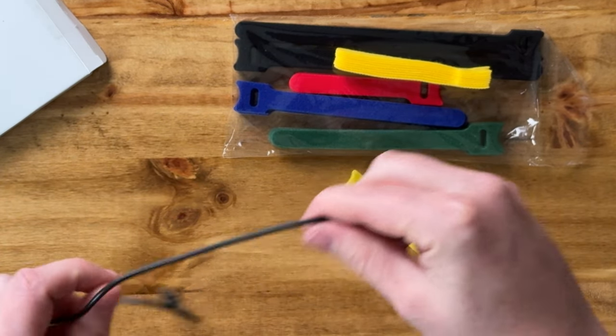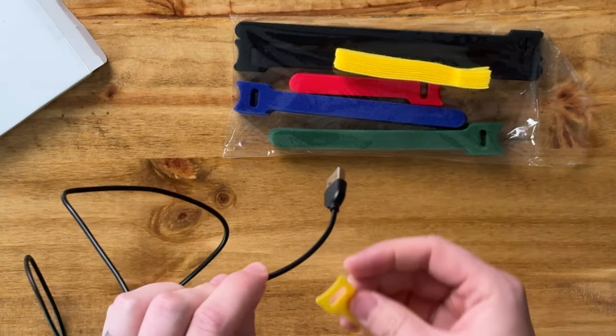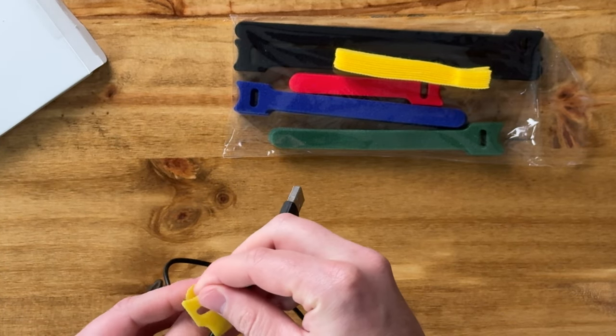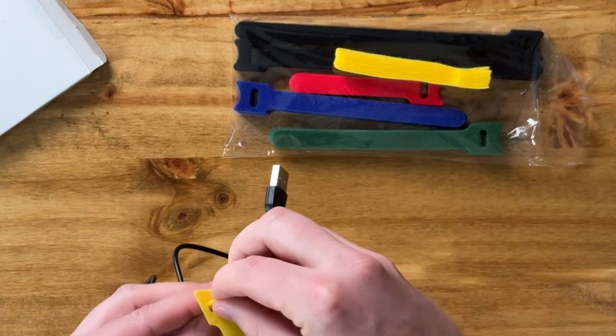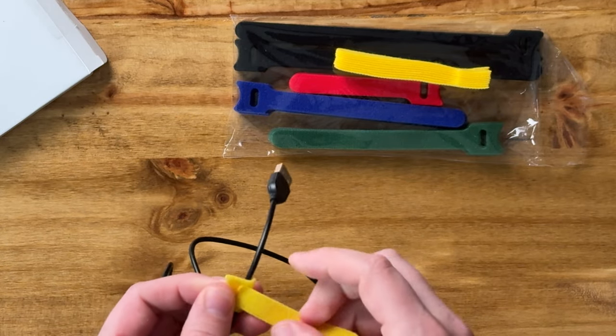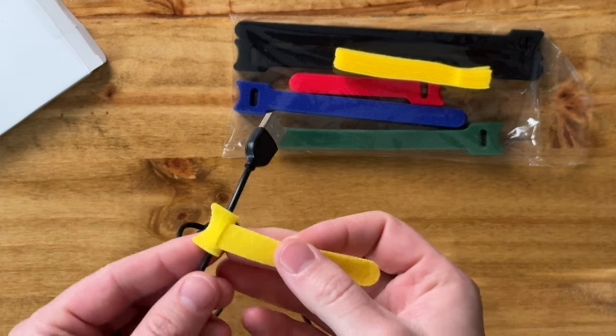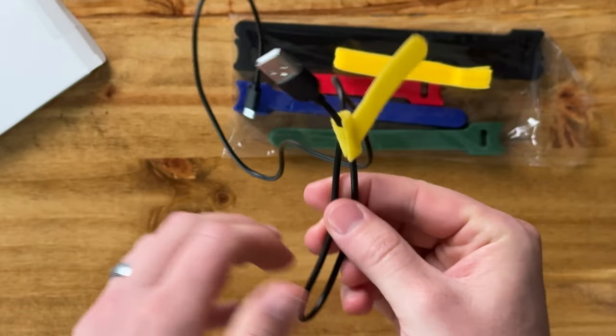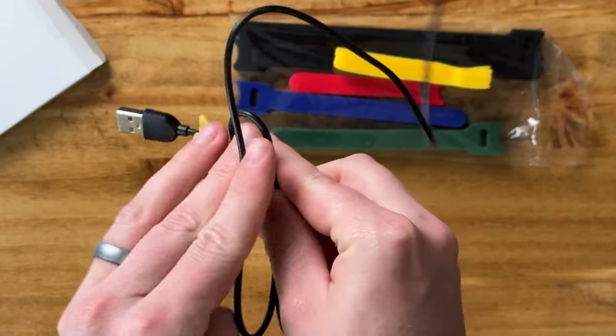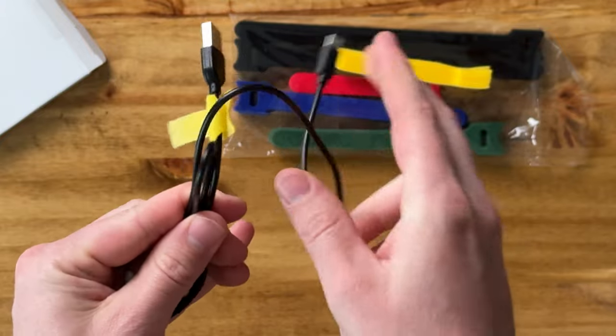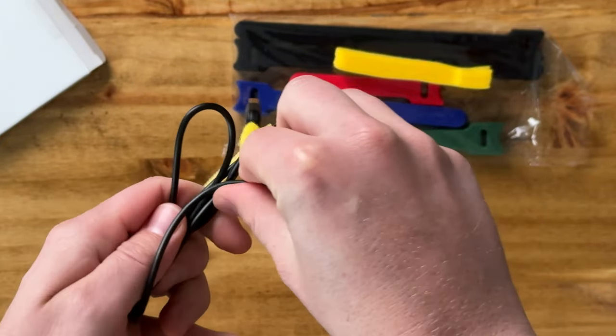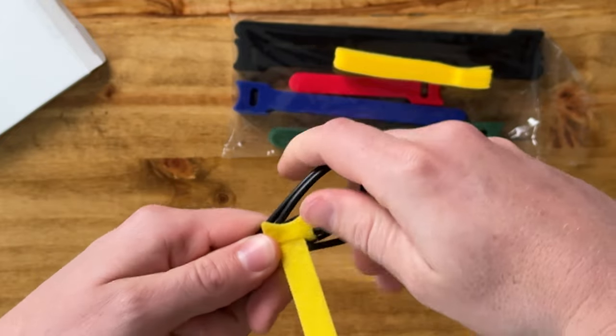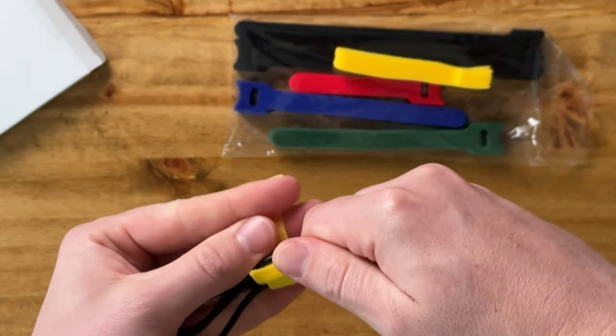The nice thing with these is you can keep it on the cable when you're not using it. You can run this through the hole, back over, and it just lives on the cable. Then when you want to tie up the cable, you put the cable together like this, pull this down, and wrap it around the cable.